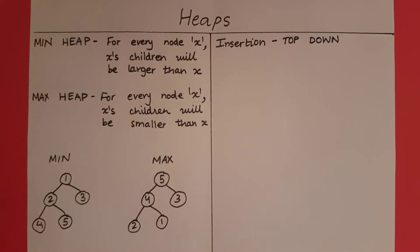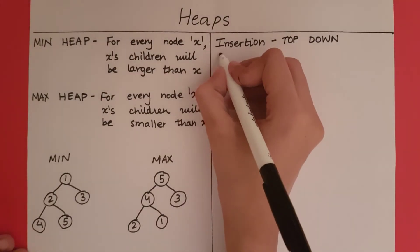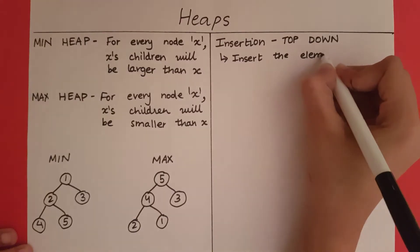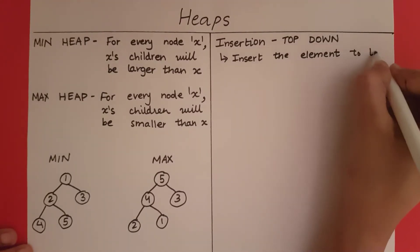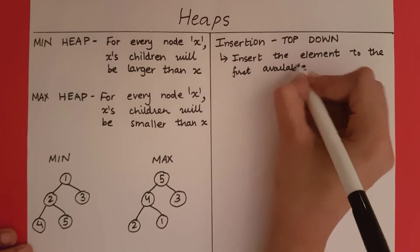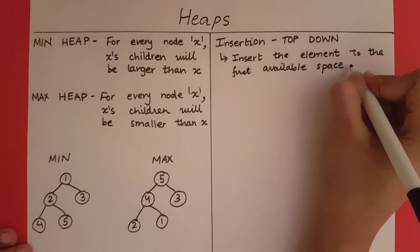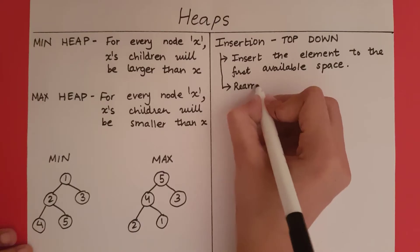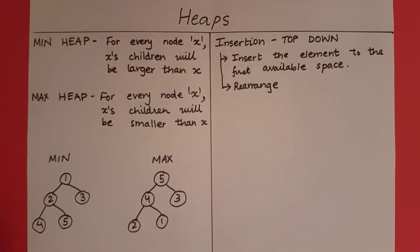So what steps must we take when using the top-down approach to insert an element into a heap? The first step is to insert the element to the first available space. After that, we must rearrange the tree if the heap property is not satisfied. In our example, let us assume we are going to be constructing a min heap.